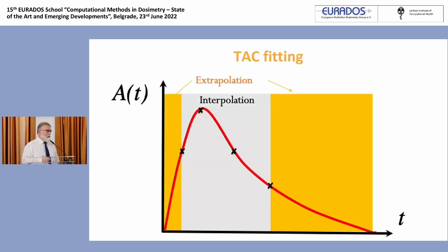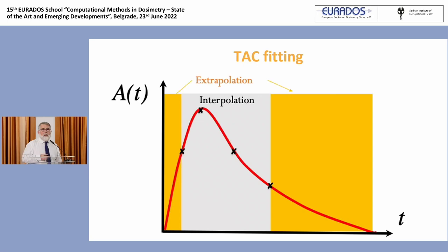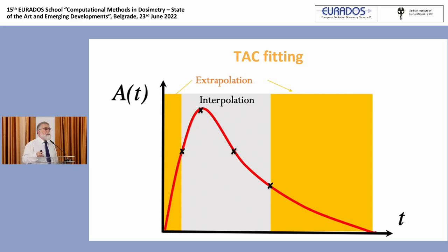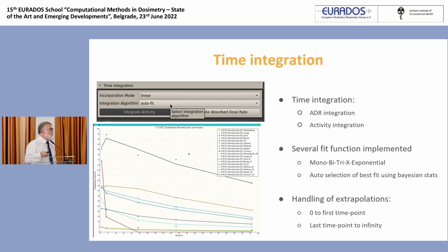For the time-activity curve fitting, we know there are two big issues: what happens before the first time point and what happens after the last time point. This can be addressed differently by different software. We have a possibility to evaluate in an easy and smart way the goodness of the fit. For example, if you still have a lot of activity at the last time point, it means your time sampling is not good. Also, after the fit you can compare the extrapolated part of cumulated activity with the total area under the curve — if 80% of your cumulated activity is actually extrapolated, you know you are in trouble. These little built-in features help the physicist assess the goodness of the fit.